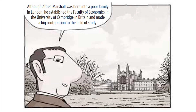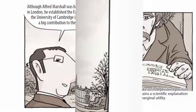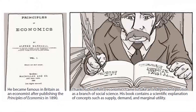Although Alfred Marshall was born into a poor family in London, he established the faculty of economics at the University of Cambridge in Britain and made a big contribution to the field of study. He became famous in Britain as an economist after publishing the Principles of Economics in 1890. Thanks to his efforts, economics came to take an independent position as a branch of social science.